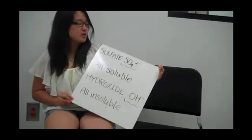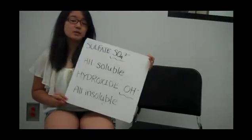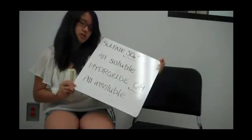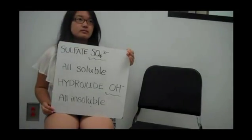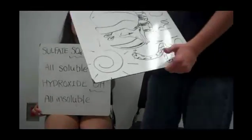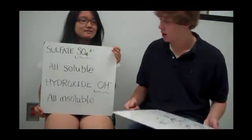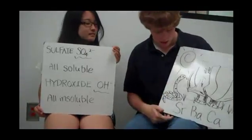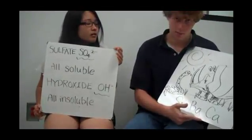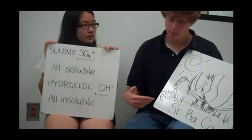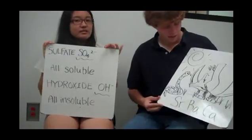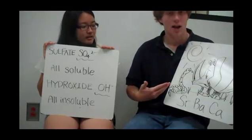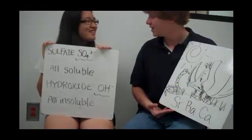Now let's talk about other substances, such as sulfate and hydroxide. Sulfate, SO₄²⁻, is all soluble, and hydroxide, OH⁻, is also all insoluble. Now that's just not true — there are a few exceptions for each. As far as sulfates go, all of them are soluble except for strontium, barium, and calcium. And all hydroxides are insoluble except for those same three elements. This drawing represents the mnemonic: 'strong rhinos battle against clever anacondas.' Oh, now I get it.